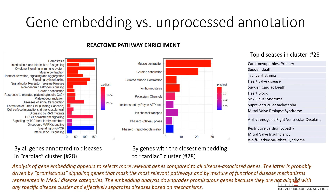Moreover, we can see that embedding-based analysis of genes results in sets that are more specific and closely related to the common etiology of diseases in corresponding clusters, when compared to the sets of all genes annotated to cluster diseases. This observation points to the possibility of using gene-disease co-embedding as a tool for evaluating annotated gene-disease associations and predicting novel associations.